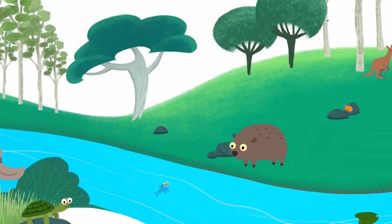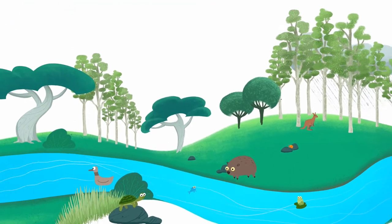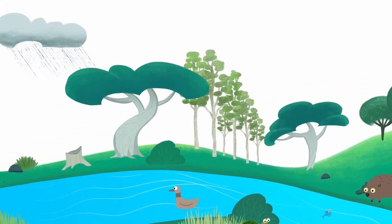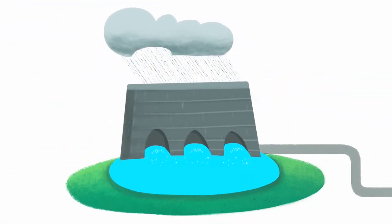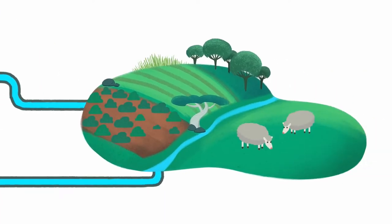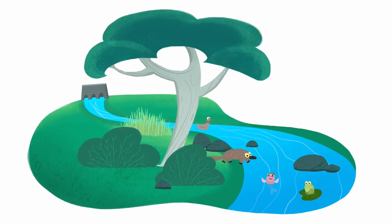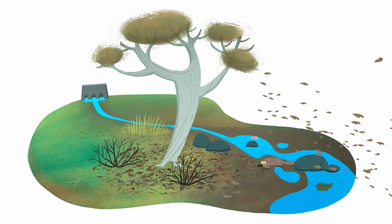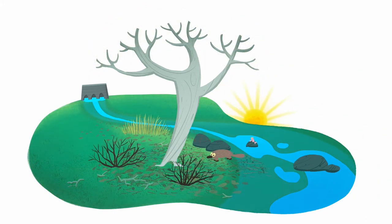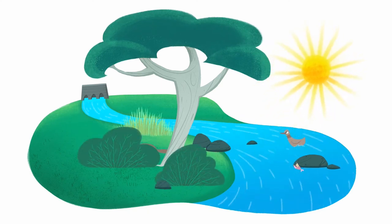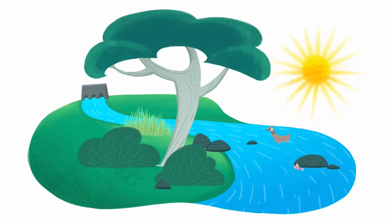Before many of our rivers were dammed, water flowed freely through the landscape. Now much of the rain and runoff is captured in the dams and used to supply towns, industries and farms. This has reduced the amount of water flowing down our rivers, onto our floodplains and into our wetlands in winter and spring. This means there are higher river flows in the hotter months when communities use more water — the opposite of what nature intended.